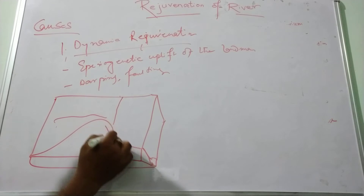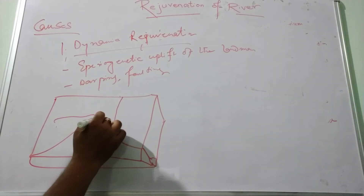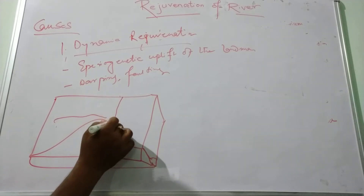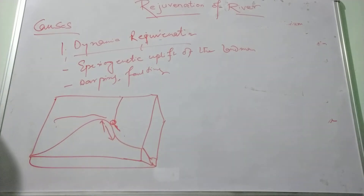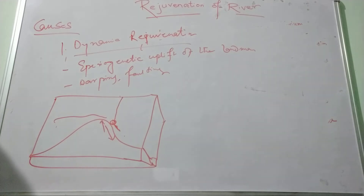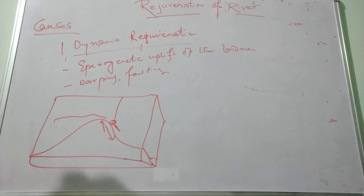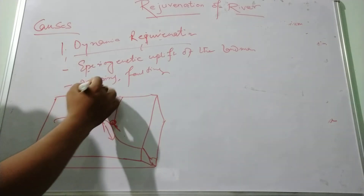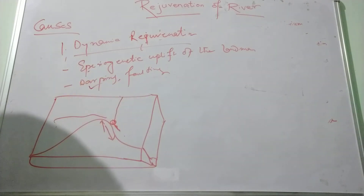If faulting occurs, it causes a new base level of the river. This is caused due to faulting or dynamic rejuvenation, which may be associated with wrapping faulting, faulting activity, or tectonic activity.